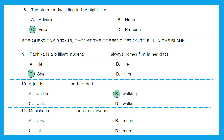Question 11: 'Manisha is dash rude to everyone.' The options are very rude, much rude, lot rude, or more rude. The right answer should be option A, 'very rude,' because it is modifying the adjective 'rude' in the sentence.